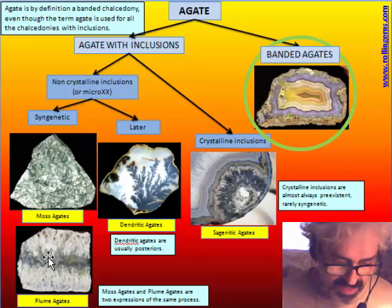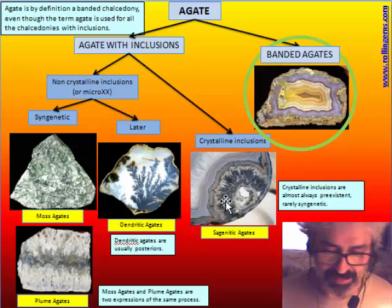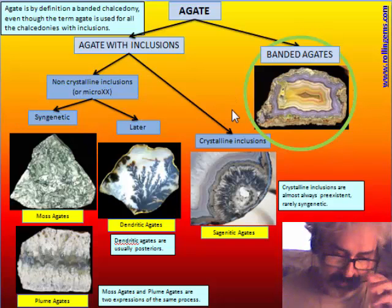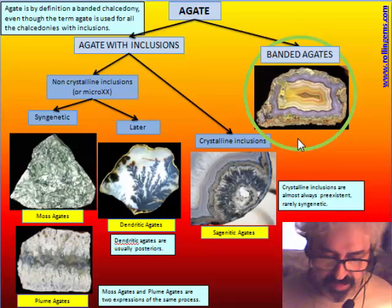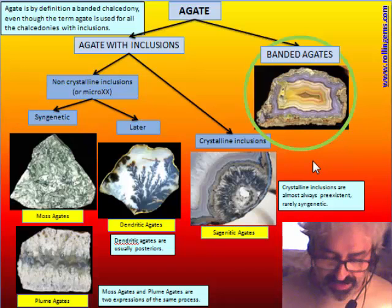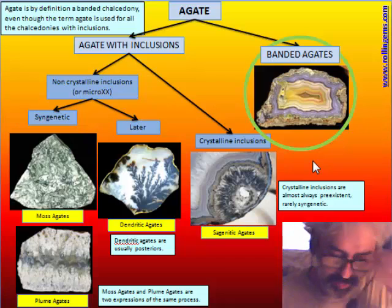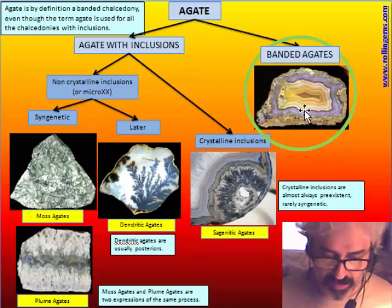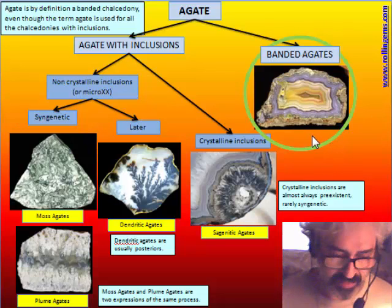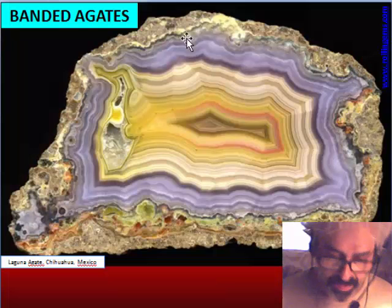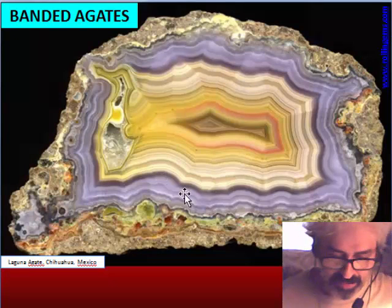We have seen moss agate, plume agate, dendritic agate, and sagenitic agate. Now we will see banded agate. This group is the most collectable and there is a lot to talk about banded agate. It's a very long theme and we will divide it into three chapters, three different videos.